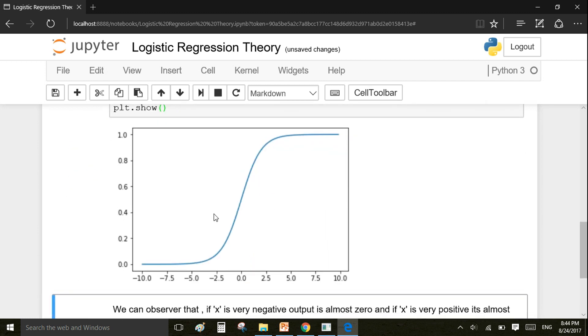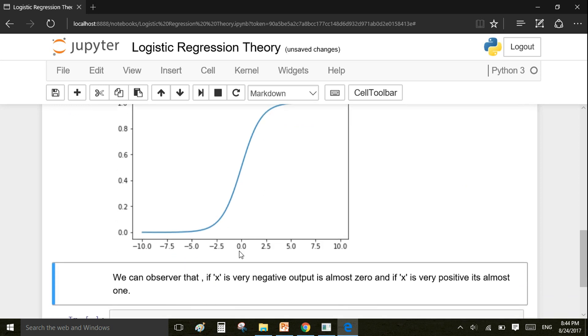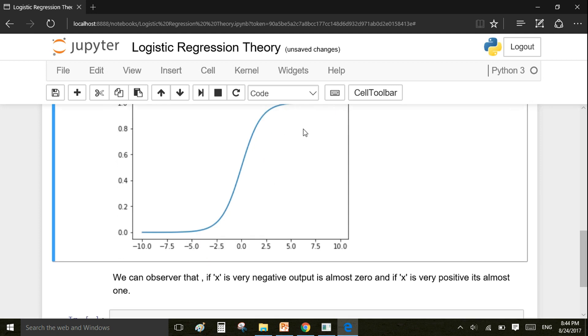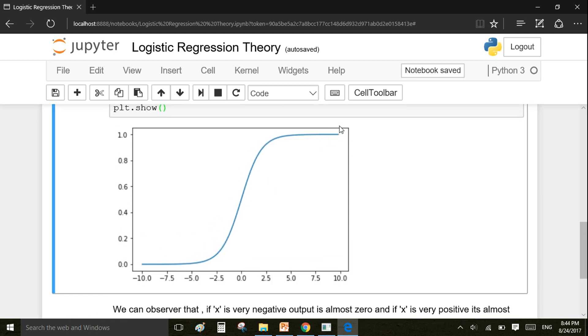So this is how the output looks. We can observe that if x is very negative, the output is almost 0, and if x is very positive, the output is almost 1. This is how the logistic function works.